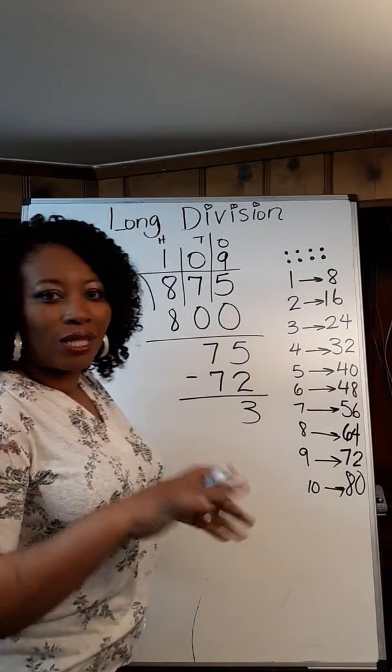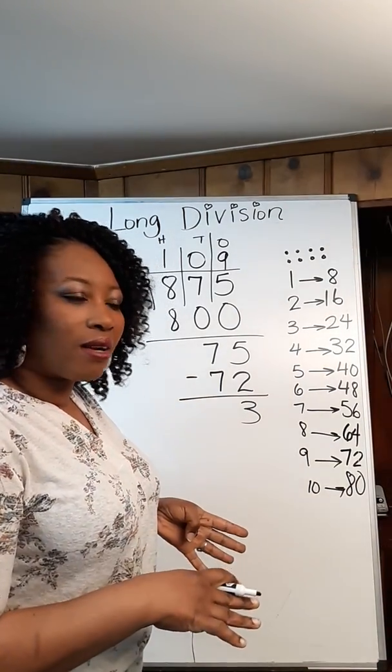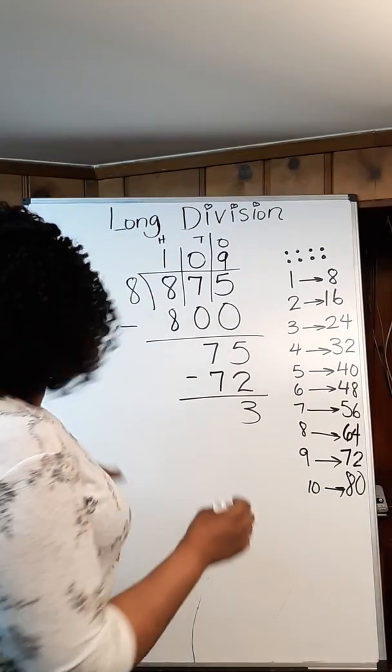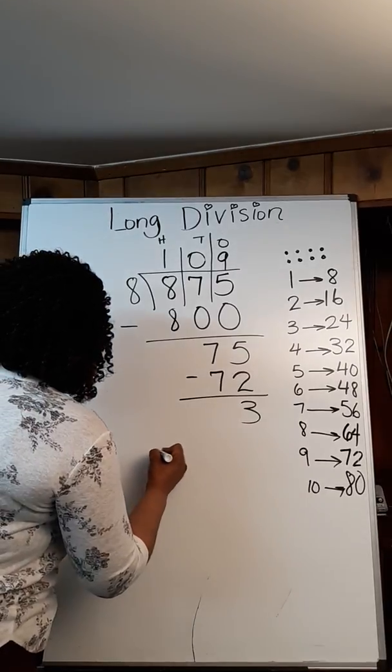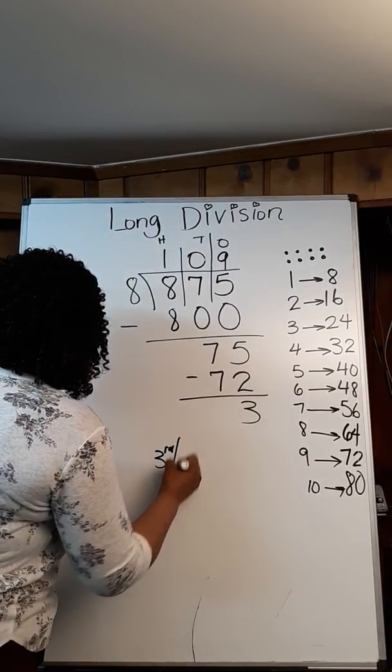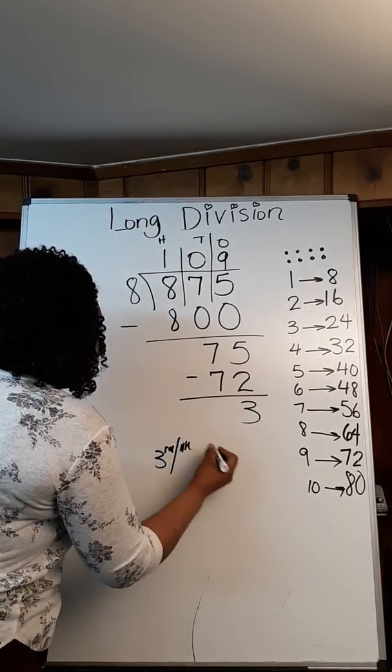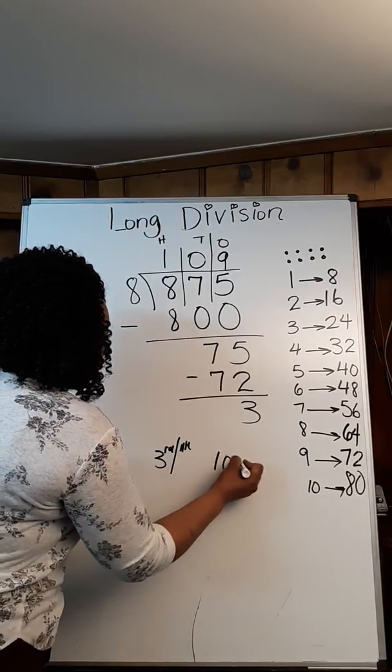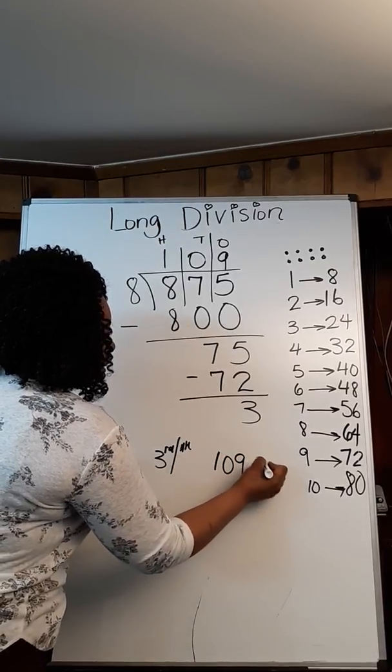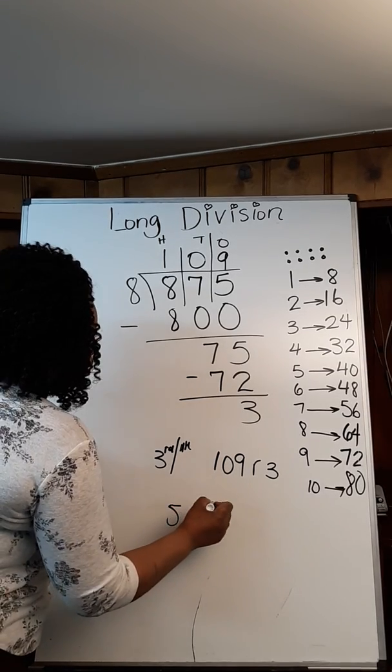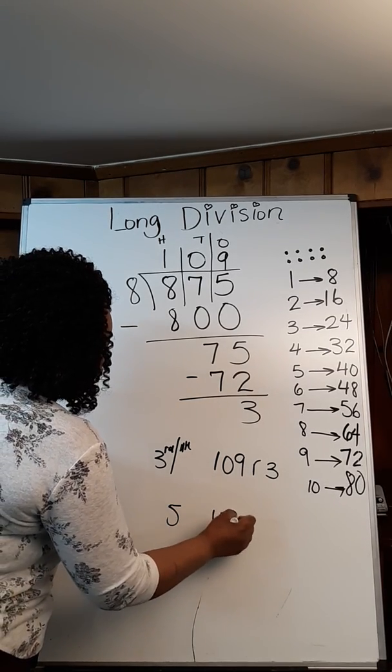So once again, we're going to represent this answer for all grade levels. The answer for third and fourth grade is going to be 109 remainder 3. For fifth grade, it's going to be 109...